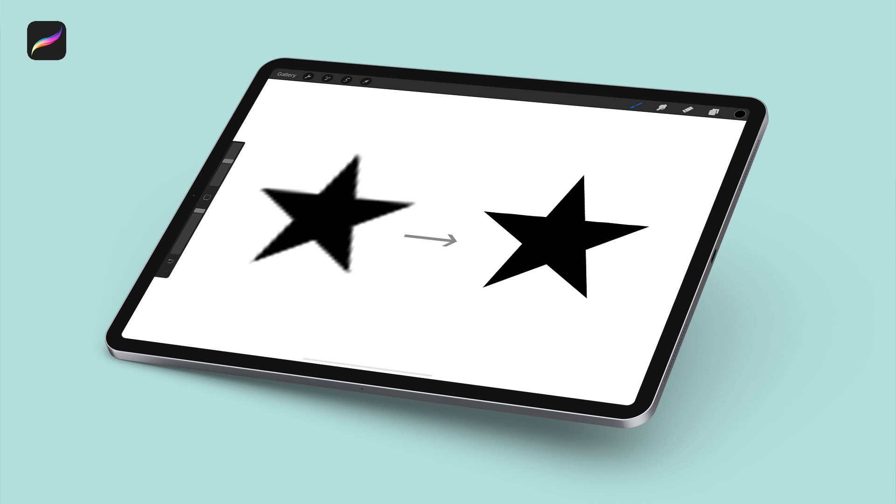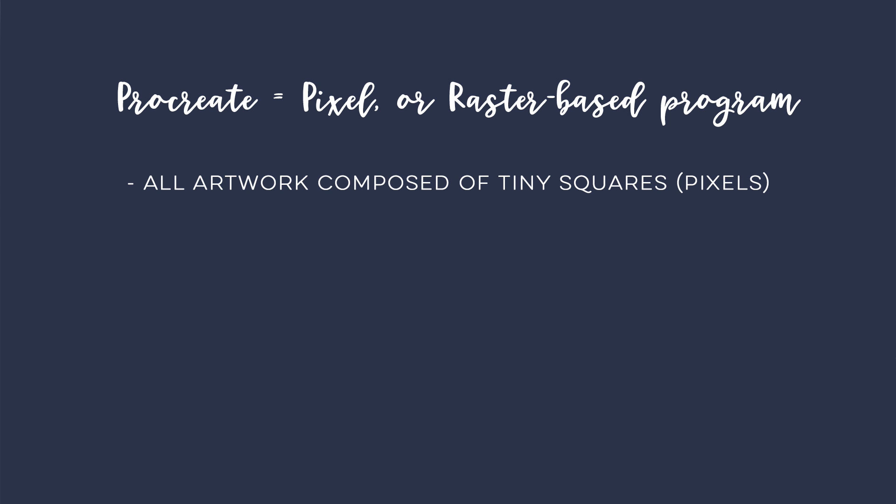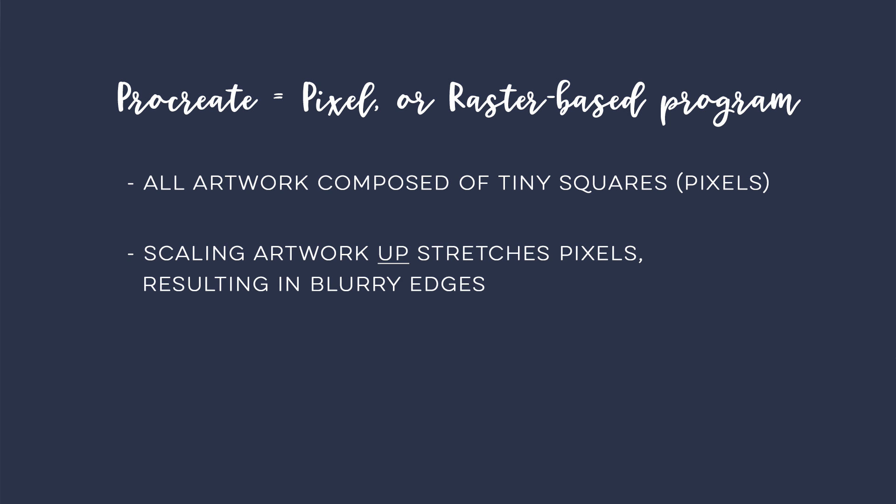There are two ways to avoid blurry edges in Procreate. First of all, it's important to understand that Procreate is a pixel or raster based program. This means that all of your artwork is made up of tiny little squares called pixels, and when you scale up those pixels — if you create artwork small and need to enlarge it — you are stretching those pixels. The program doesn't have that extra information for the larger size, so when you scale it up it creates blurry edges. Whereas a point-based program like Adobe Illustrator is made up of points, so you can infinitely rescale and never lose quality. That is not the case with pixel-based programs like Procreate or Photoshop.